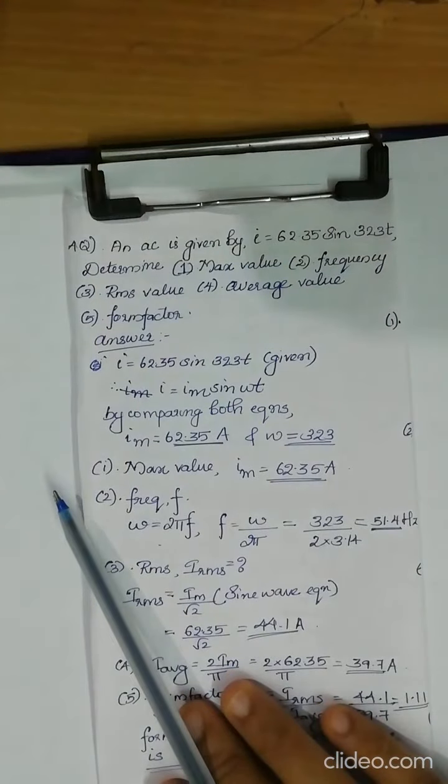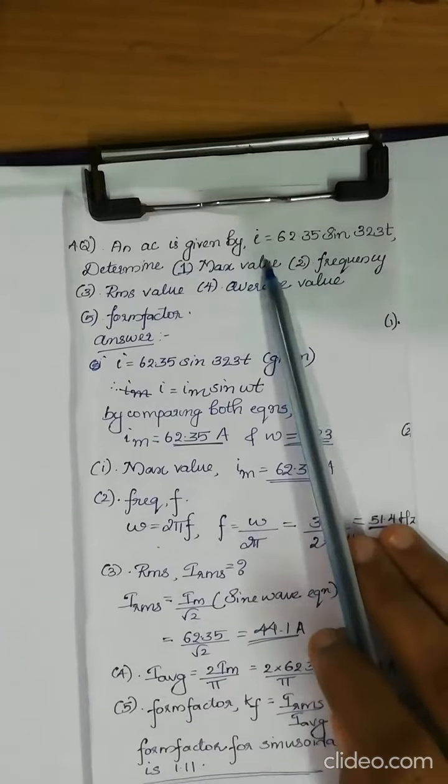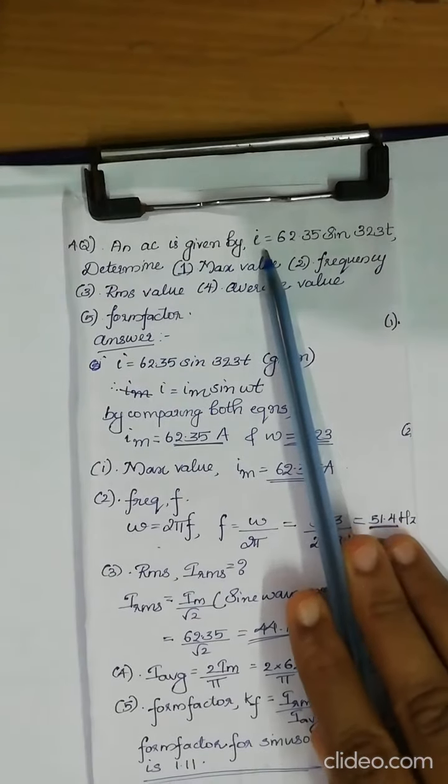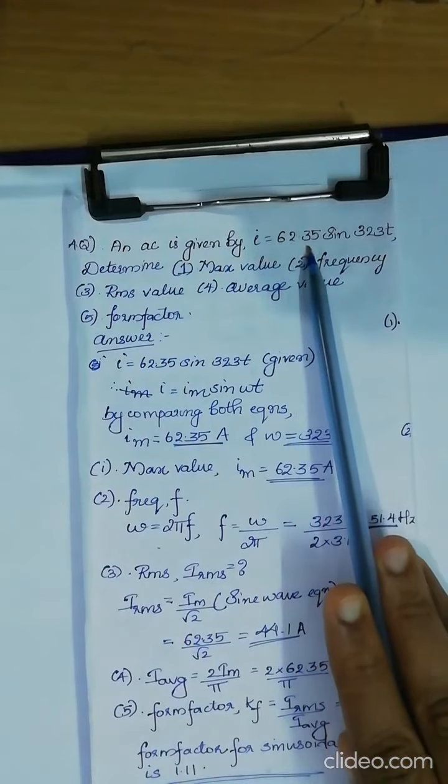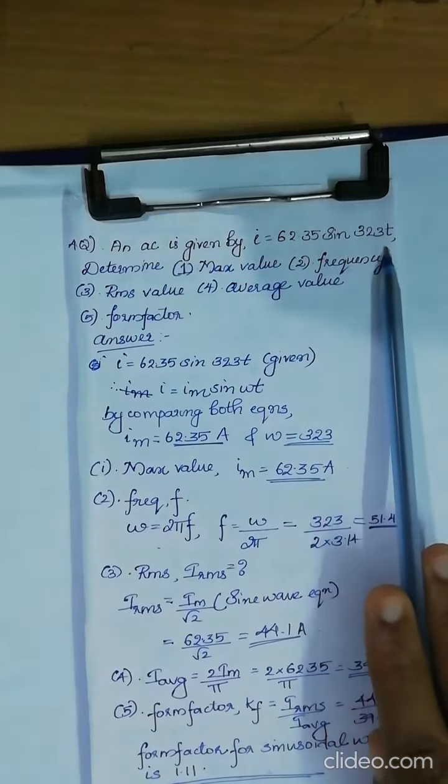Hi everyone, today we will see how to find the average and RMS value of a given signal. If the given signal is i, i is given by 62.35 sin 323t.